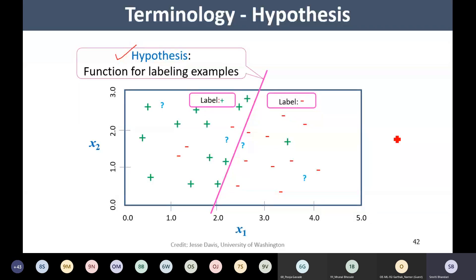Hypothesis is a function that is used to label the examples. I may predict that the question mark samples lying towards the left are positive, and those lying towards the right are negative. These two samples lie towards the left of this line, and these two samples lie towards the right of the line. This line is my hypothesis — a mathematical function that helped me label the samples, computed based on the training data I had.